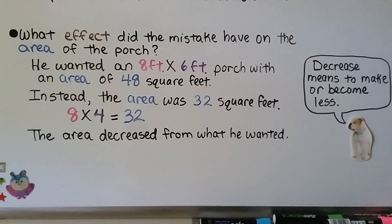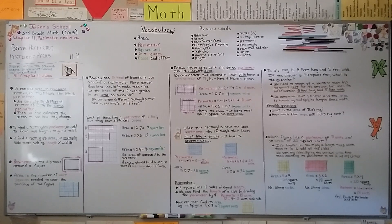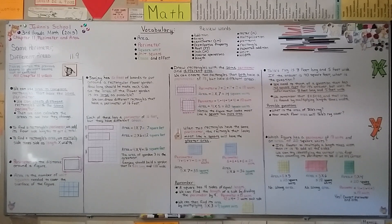Decrease means to make or become less, so both measurements were less than what he wanted. So remember: rectangles can have the exact same perimeter but different areas. When two rectangles have the same perimeter, the one that looks most like a square will have the greater area. In our next lesson, 11.10, we're going to flip this around — same area but different perimeters.